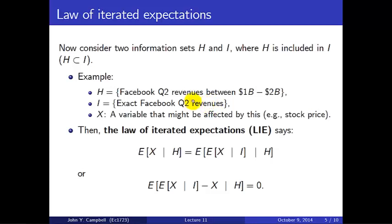Maybe i is the exact number for the Q2 revenues of Facebook, and obviously if you know the exact number then you know whether or not the revenues lie between one billion and two billion, and thus h is included in i. And finally, x is some variable that might be affected by the revenue of Facebook, for example, the stock price of Facebook.